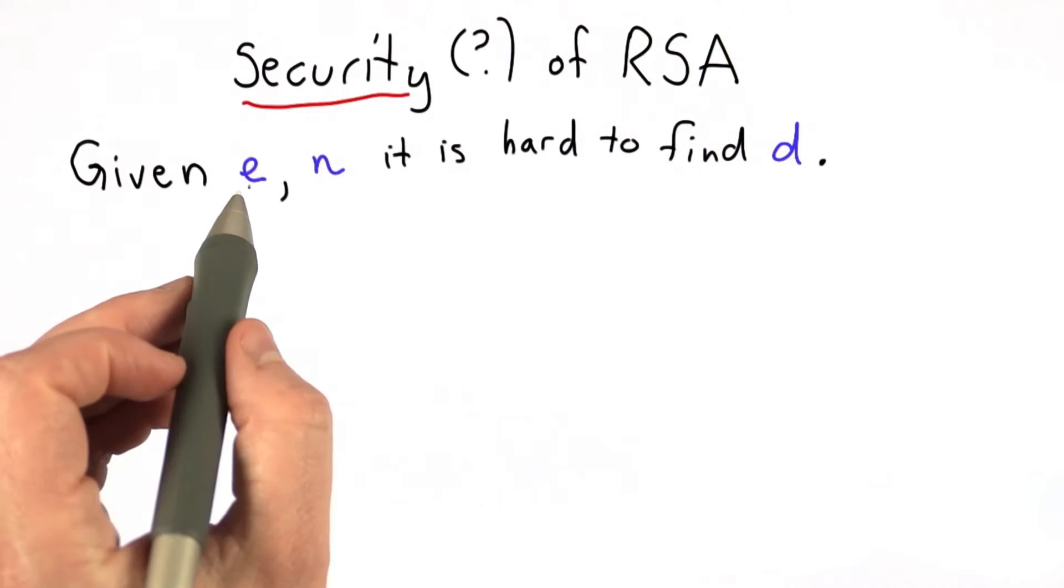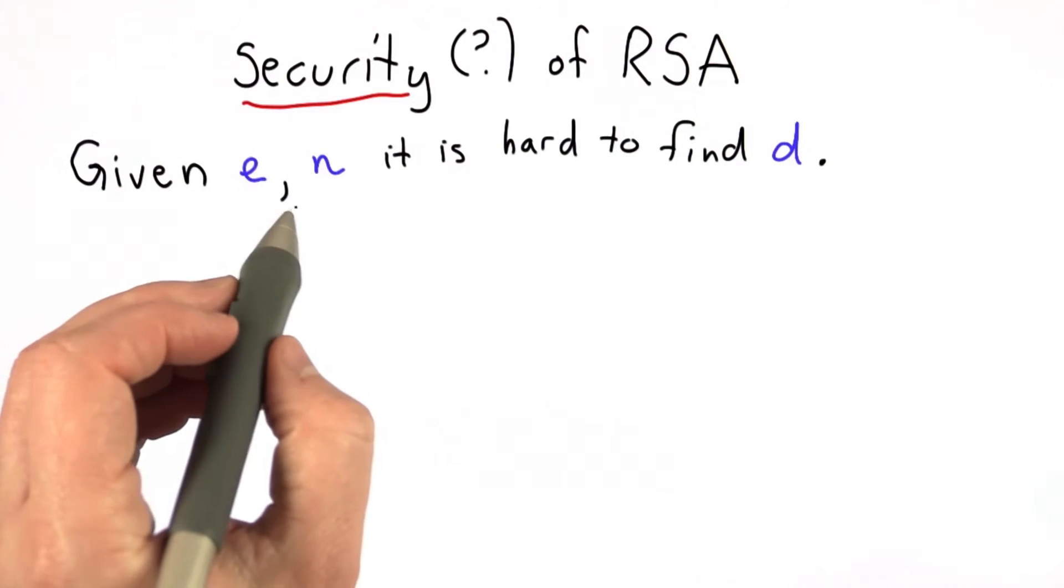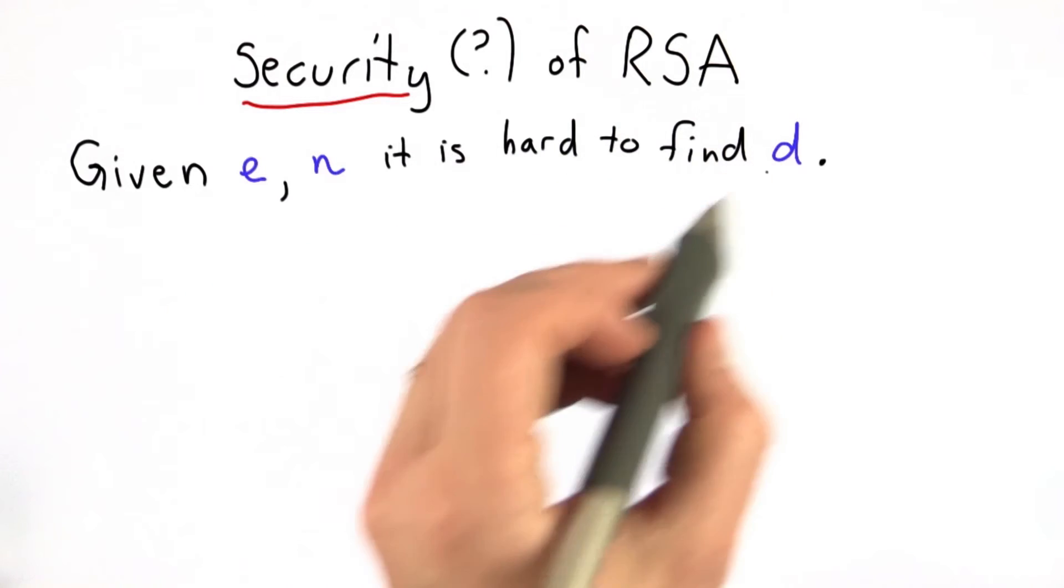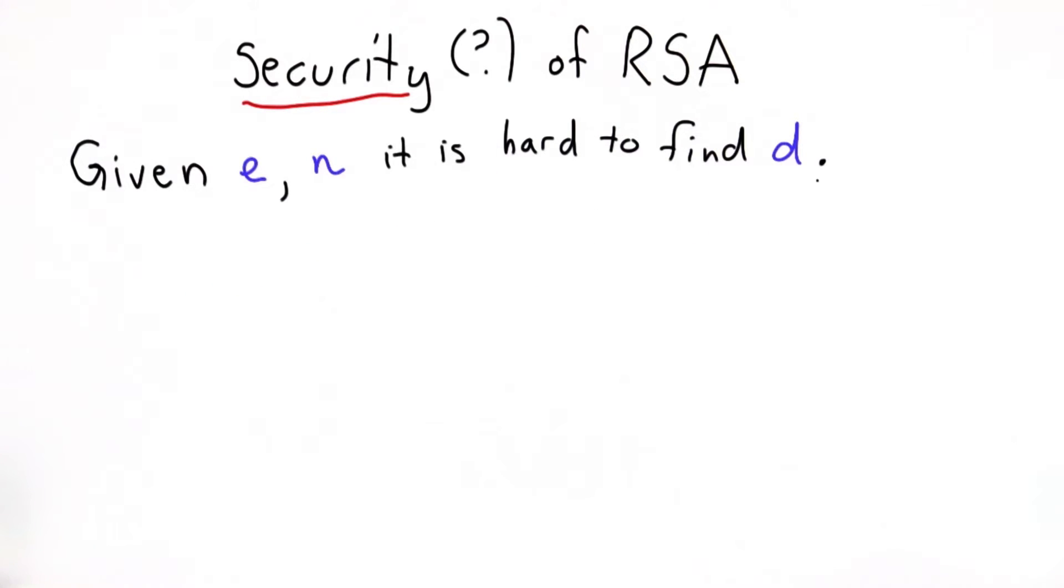So this is the property that we need, that given e and n, which is the public key, it's hard for an attacker to find d. We actually need stronger properties than just this.